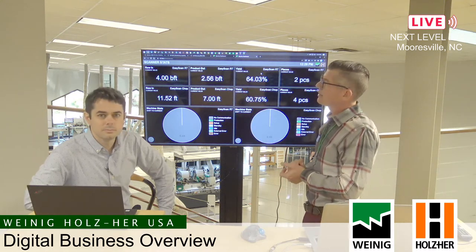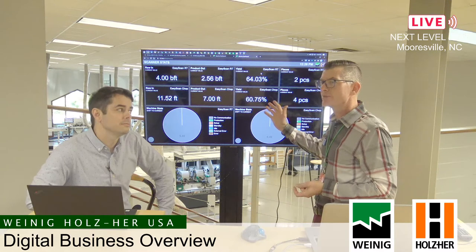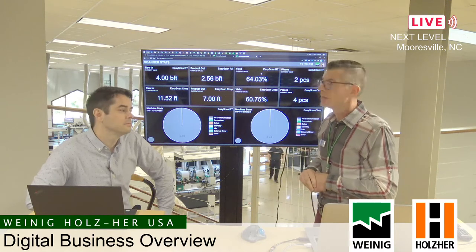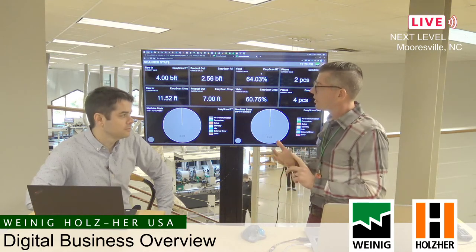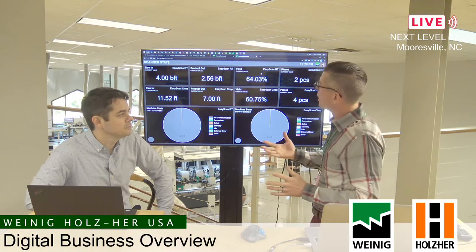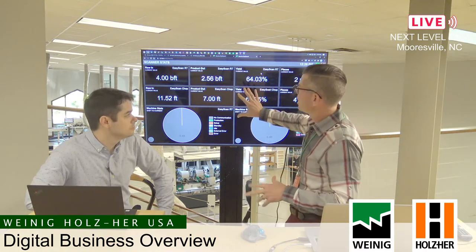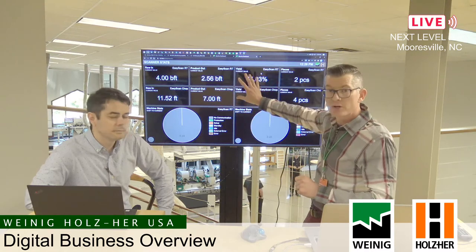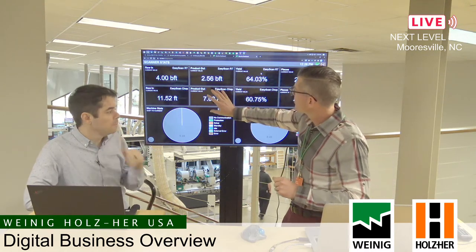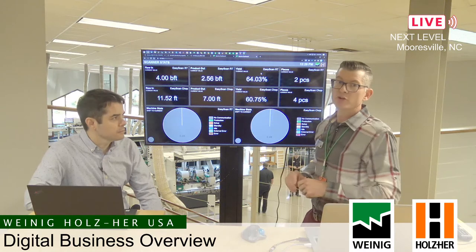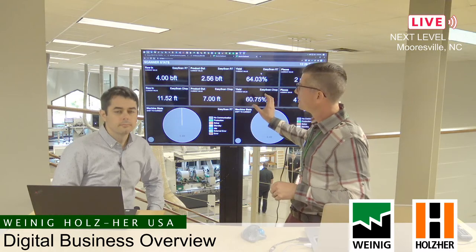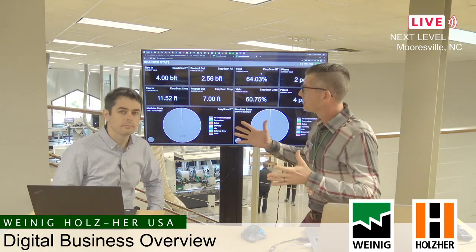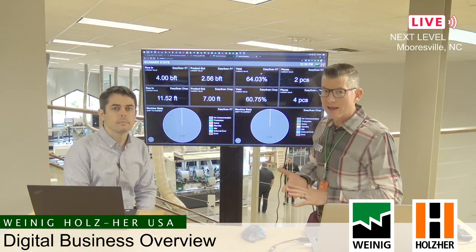Imagine a display like this set up beside a single machine. You could have maintenance information, notification-related information, machine state, and job information. Set up for a molder, for example: throughput information across the top, and below that maintenance-related widgets so that as maintenance staff walk through the building, they can clearly see the current state of maintenance tasks.